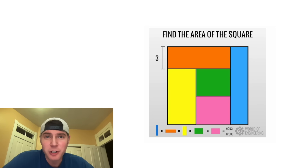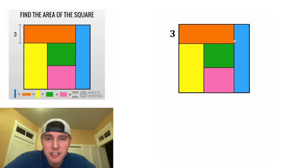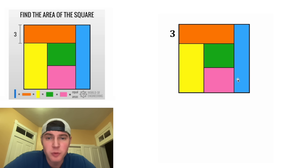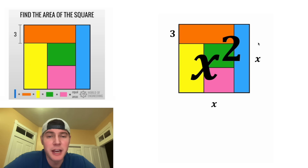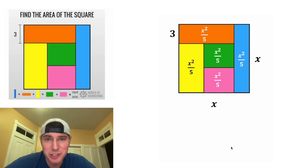If you're gonna try this on your own, pause it right now, because I'm gonna solve it in three, two, one. Since the areas of all five rectangles are equal to each other, that means each rectangle has an area that's one fifth of the entire square. So if I make the square X by X, the entire square is X squared, and each rectangle would be X squared divided by five.